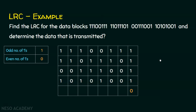For the second column, we have only two 1s — that is an odd number — so we use 1 here. In the third column, we have two 1s, which is even, so we use 0. For the fourth column, we have three 1s — an odd number — so we use 1. For the fifth column, we use 0 because we have two 1s. For the sixth column, we have an odd number of 1s so we use 1. For the seventh column, we have an even number of 1s so we use 0. For the last column, we have an odd number of 1s so we use 1.